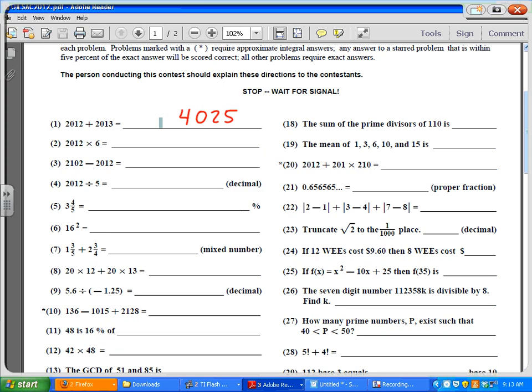The next one I'm going to multiply 2012 times 6. I can do 12 times 6, that's 72. And then 0 times 6, that's 0. And 2 times 6 is 12.